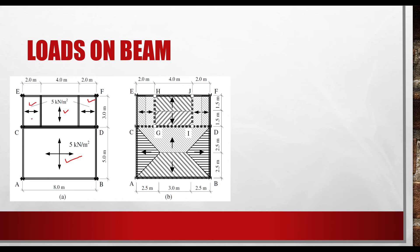If we consider panel 1, panel 2, panel 3, and panel 4 — panel 1 is a one-way slab in which the load is distributed in two equal parts, acting as a uniformly distributed load on the supporting beams. The same applies to panels 2 and 3: the slab is divided into two equal parts and acts directly on the beam as a uniformly distributed load, because these slabs are one-way slabs.